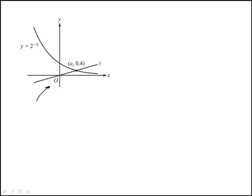Here we're shown this figure and we're told that line L passes through the origin and intersects the graph of y equals 2 to the power minus x at this point. A is the x-coordinate and the y-coordinate is 0.4.